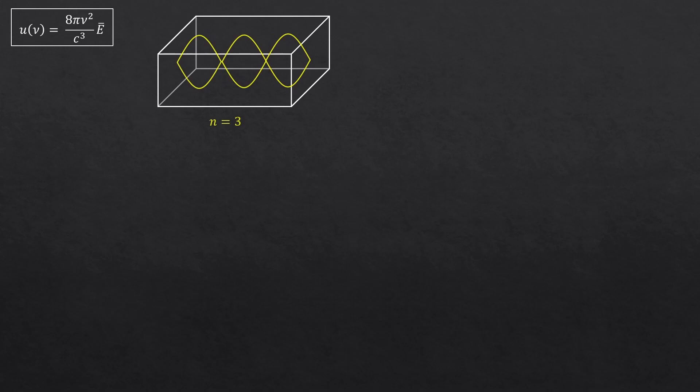Also, these harmonics could form in different directions like this, right? Like this too. So the harmonic numbers are multiples of L, which is the length of the box, divided by the half lambda.